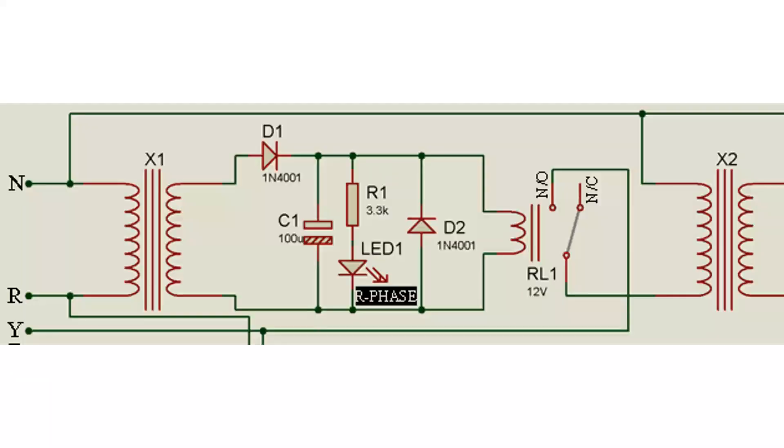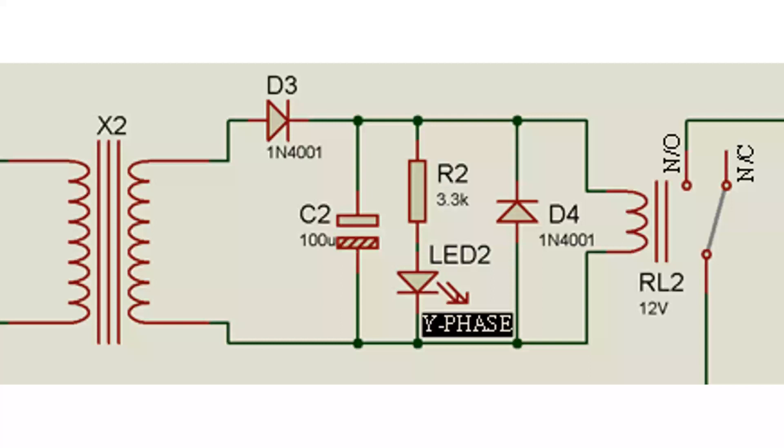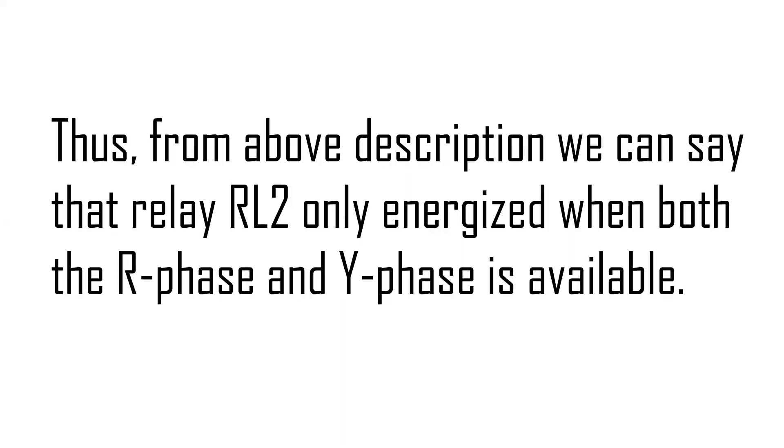Let's see the connection of relay. The NO contact, that is, normally open contact of relay is connected to Y phase of mains line, and common pin of relay RL1 is connected to one terminal of primary winding of transformer X2, where other terminal of primary winding of transformer X2 is connected to neutral line. The rest of the circuit is same as previously mentioned. The step-down voltage is rectified using half-wave rectifier, which is further filtered using capacitor C1, and this voltage is also used to energize the relay RL2. Relay RL2 only energized when both the R phase and Y phase is available.